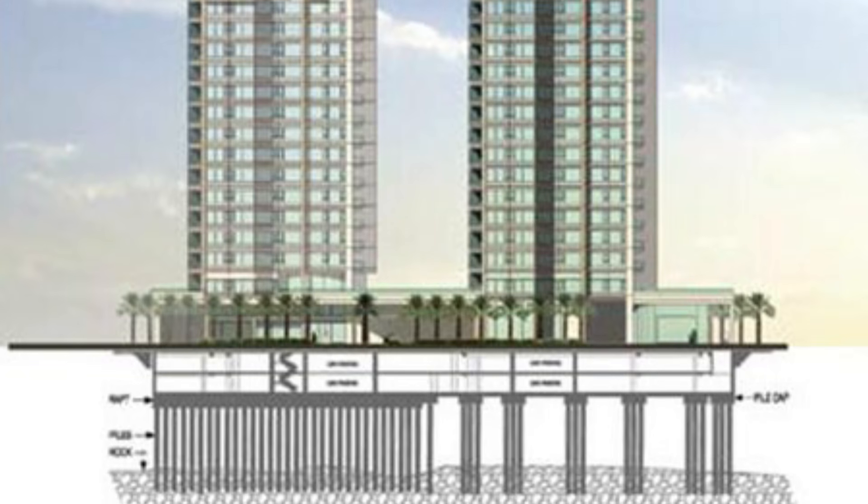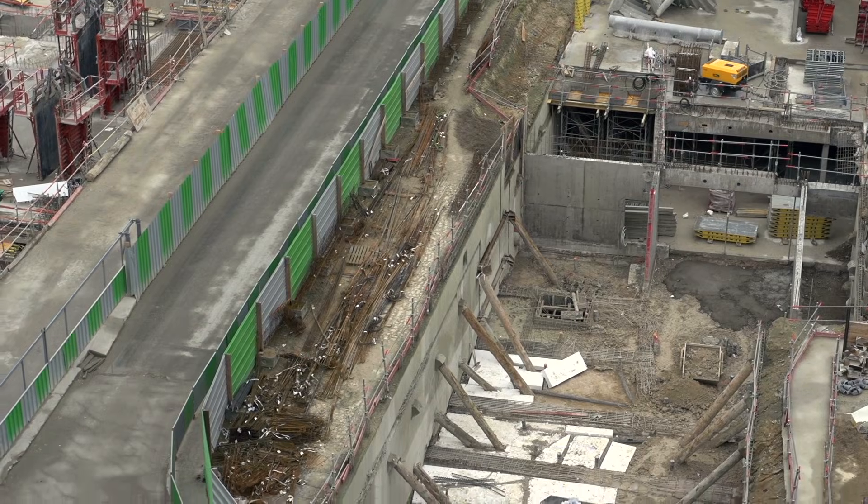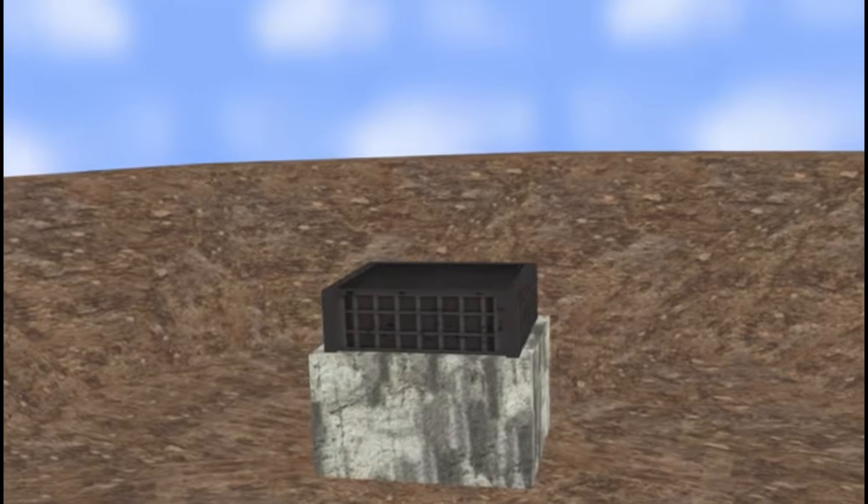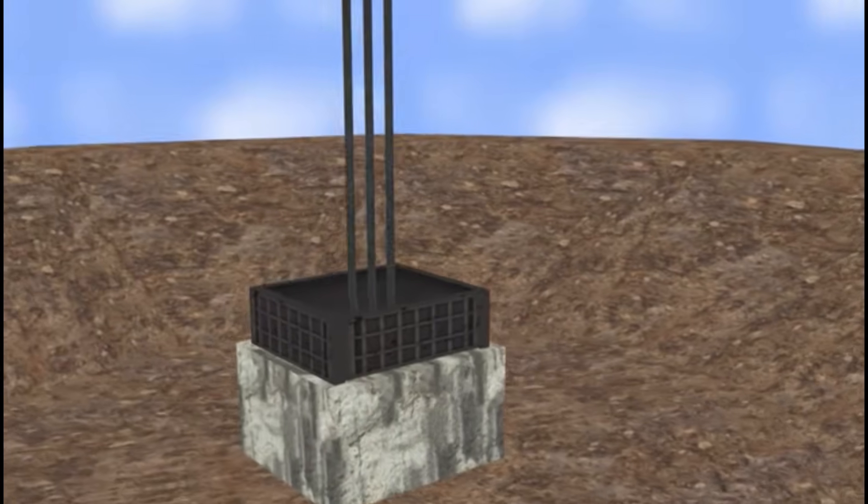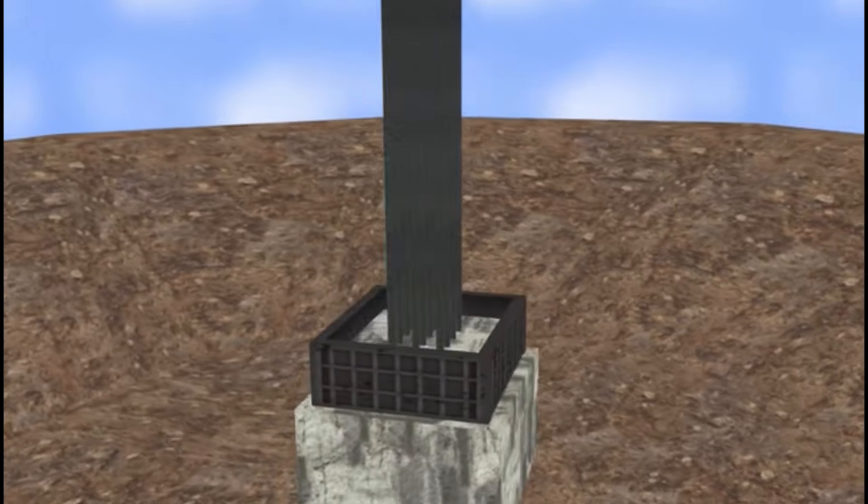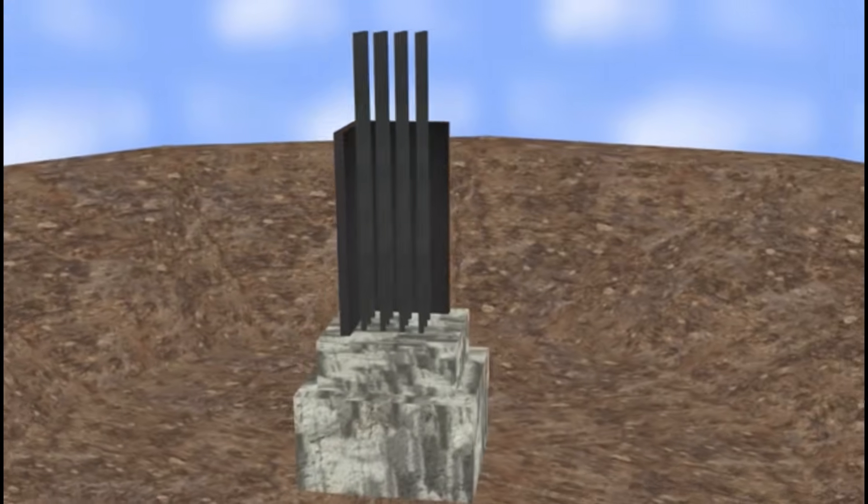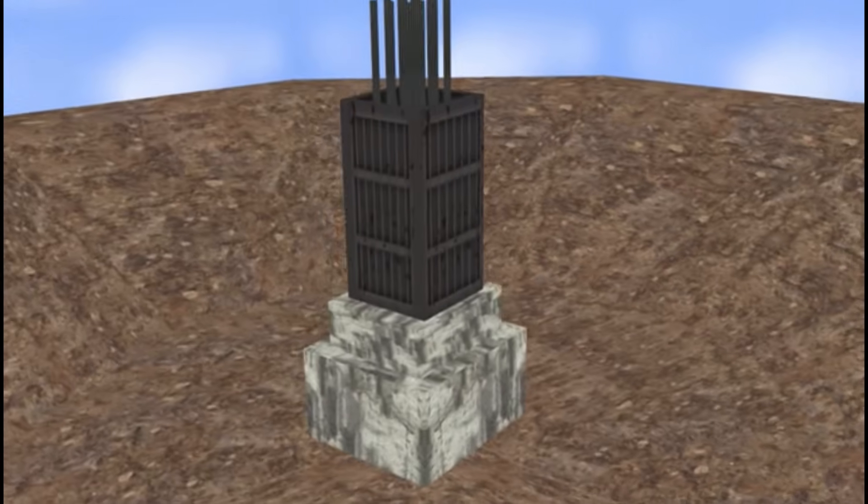But when it comes to buildings, they actually start far beneath the ground. Typically a large hole is dug and filled with dense concrete where the main support beams are driven into. This portion, as well as the lower sections of buildings, are really heavy. In fact, sometimes the center of mass of a building is beneath the surface and this distribution of weight almost removes any risk of toppling from wind or earthquakes.